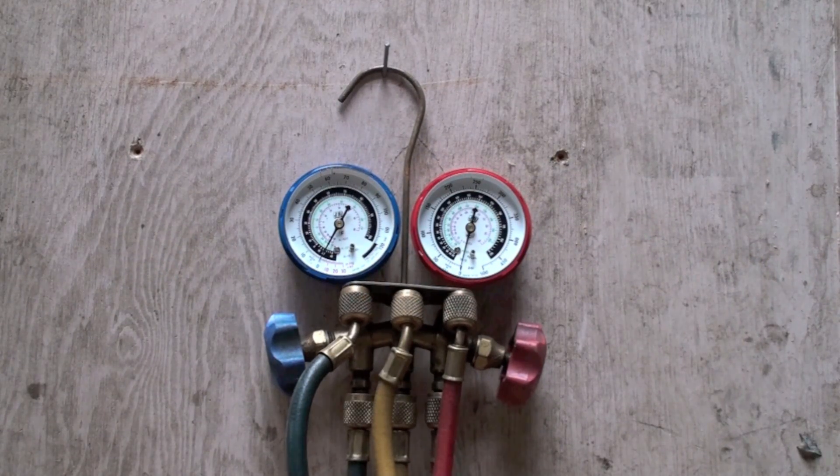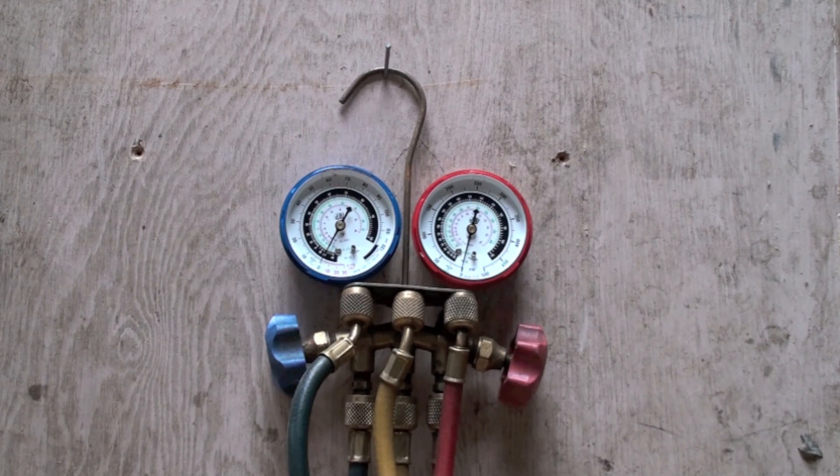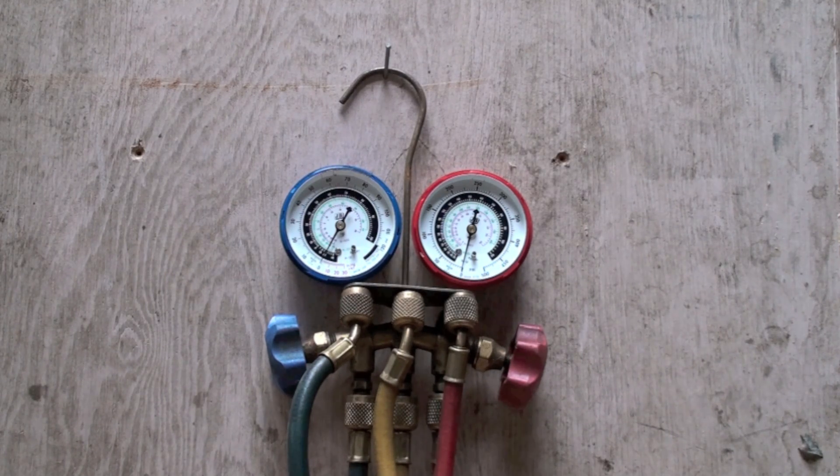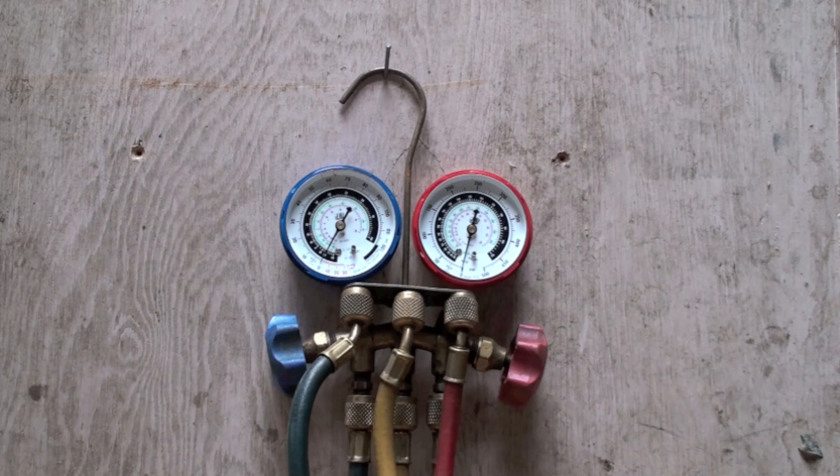Okay, this is what a manifold gauge set looks like. On the left is a compound or absolute pressure gauge, and the right is a gauge pressure gauge. Now we're going to look at these a little closer and see if we can figure out how they work.